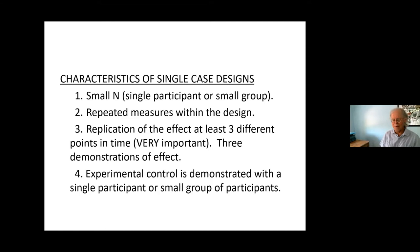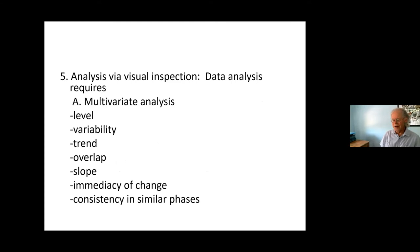The characteristics of single case design: it's a small number of participants in the study. It can be a single person, small group, classroom, whatever. You have repeated measures within design, so you're taking data as you go along. The replication of the effect occurs at least three times. This is extremely important. For it to be a good study, you have to have three replications of the effect. Experimental control is demonstrated with a single participant or a small number of participants. Then it requires visual analysis. Visual analysis looks at level, variability, trend, overlap, slope, immediacy of change, and consistency in similar phases. We don't have time to go through all these things in this presentation, but these are things that you want to look at when you're analyzing the single subject data, which is usually presented in a graph.